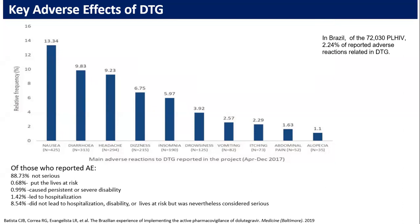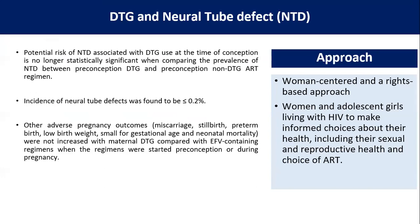Regarding DTG and neural tube defects: initial data suggested a significant increase in neural tube defects, but later evidence suggests that neural tube defects with the use of DTG in pre-conception, during conception, or after conception are not more than with other non-DTG ART regimens. The incidence of neural tube defects is found to be less than 0.2%. Other adverse pregnancy outcomes — miscarriage, stillbirth, low birth weight, small for gestational age, neonatal mortality — were not increased with maternal DTG compared with efavirenz-containing regimens started pre-conception or during pregnancy.